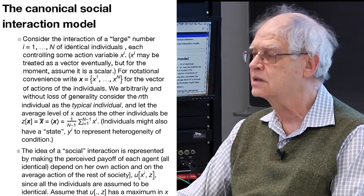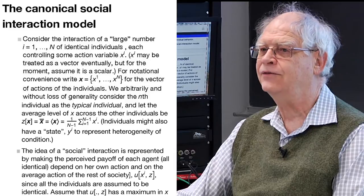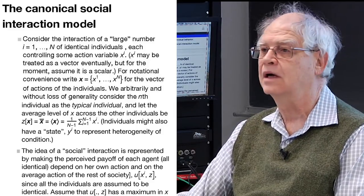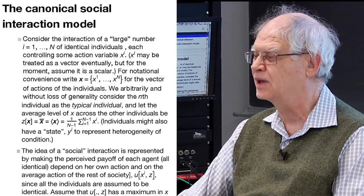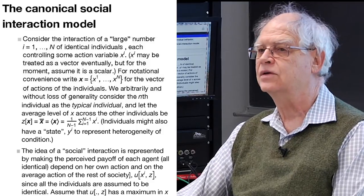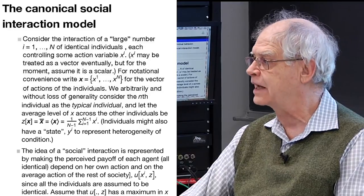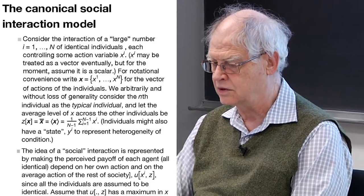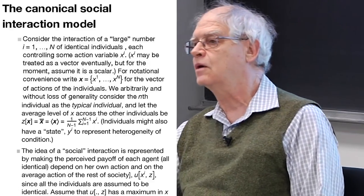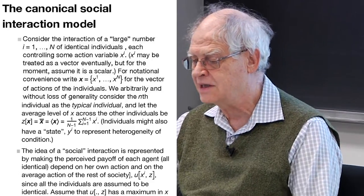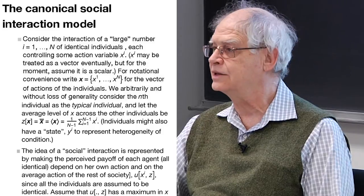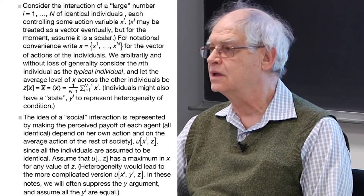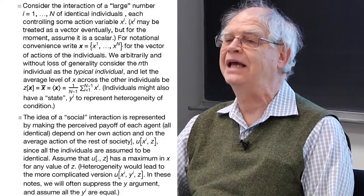These identical agent models have a great deal of information to give us about the general types of dilemmas of social interaction. So you have a number of identical agents, and they all control some action variable. In different contexts, that action variable is going to be a lot of different things. We're going to see, over the course of the semester, applications of this model to a wide range of economic and political economic circumstances. The payoffs as a function of the action variables can be different, but the structure of the model is always going to be the same.